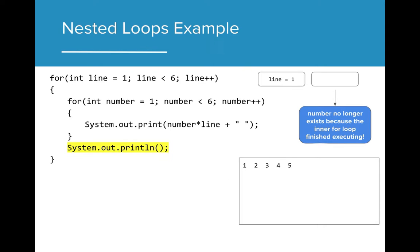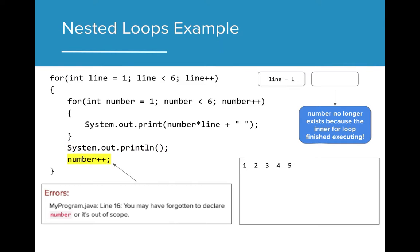It's important to note that number now no longer exists in the scope of our program, as it was only initialized inside the inner for loop. If we tried to make a call to number somewhere outside of the inner for loop, this would throw an error indicating that number has yet to be declared or is out of scope. When writing nested loops, it's important to pay attention to where our variables exist in the program to avoid making errors.